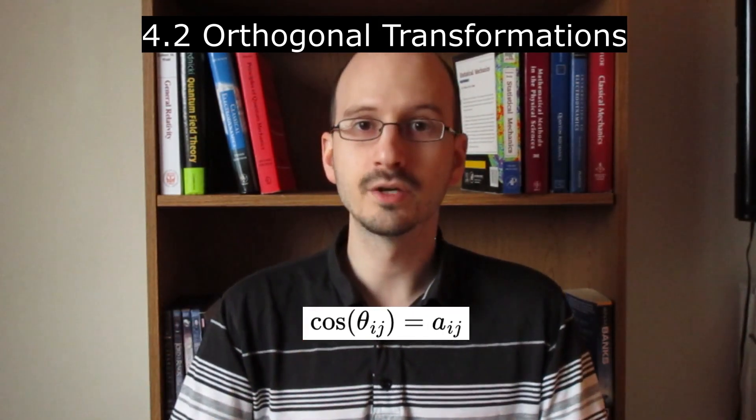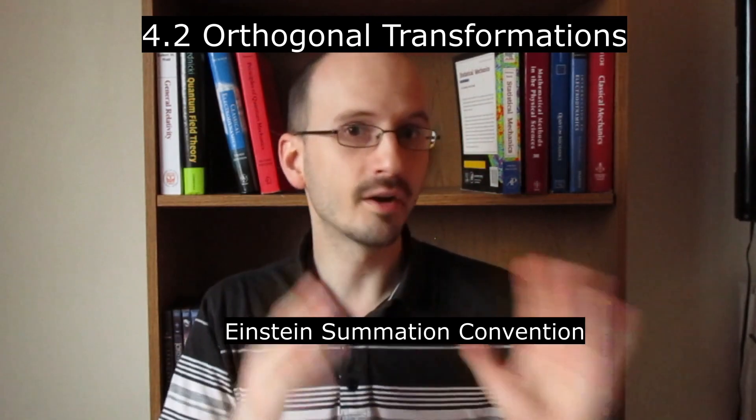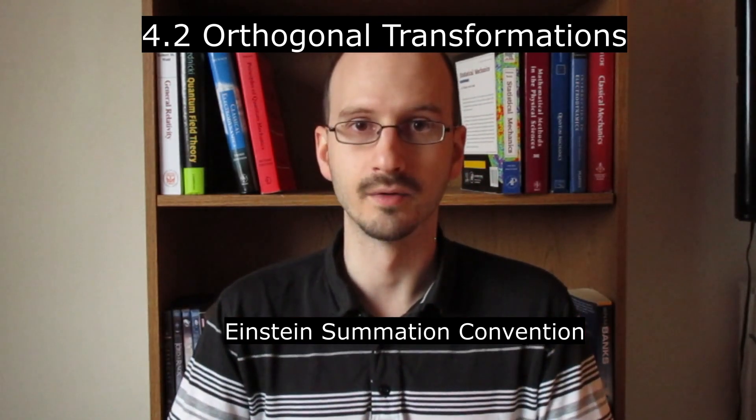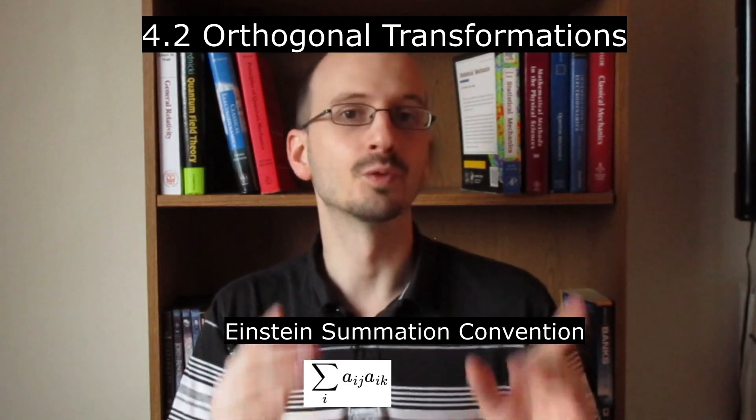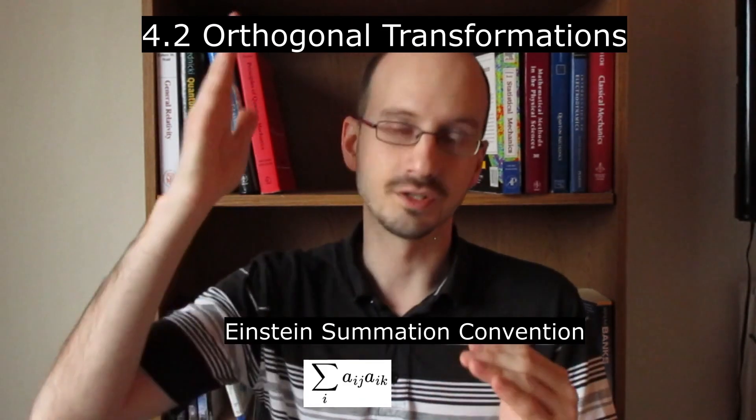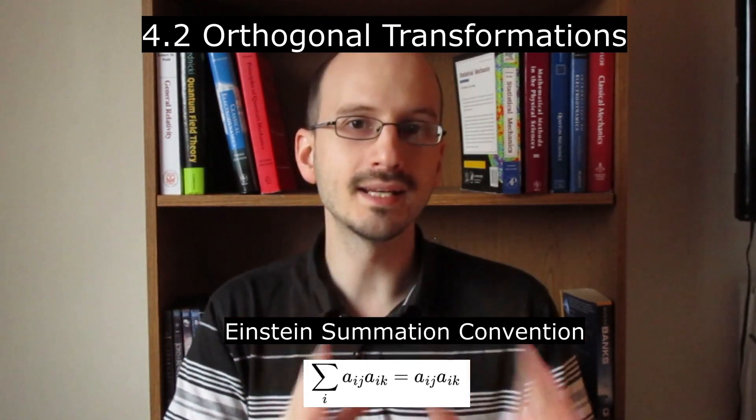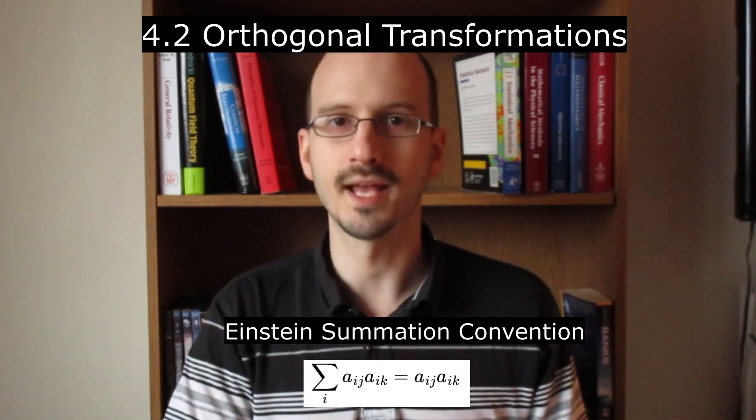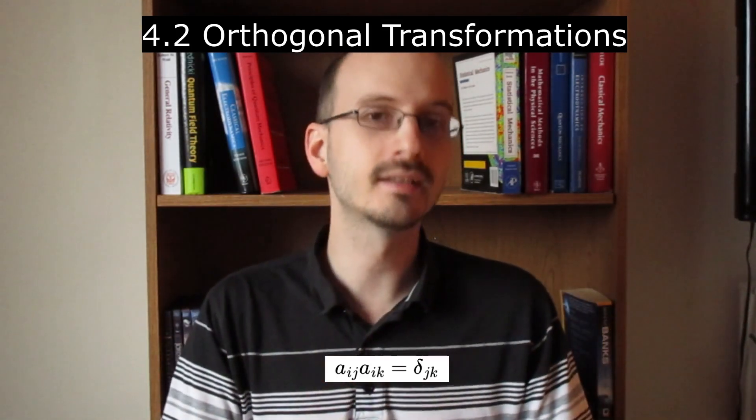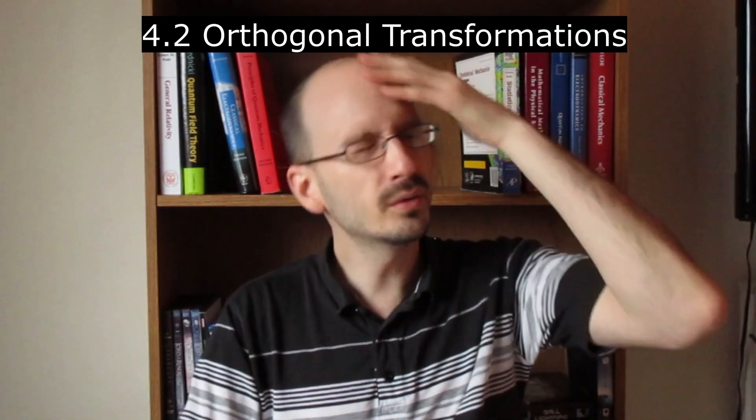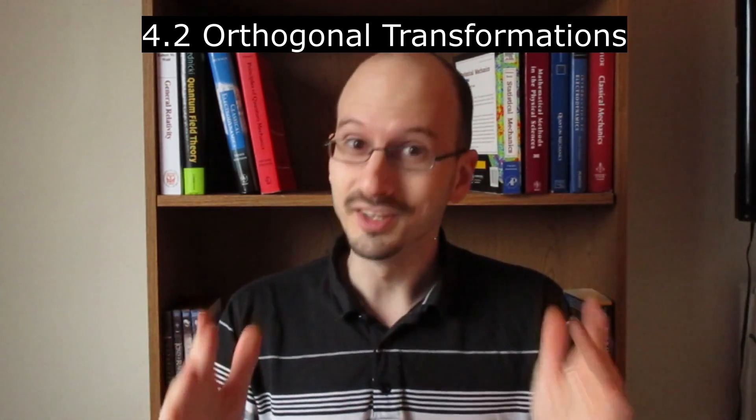The book then introduces a math notation called Einstein summation notation. And this is math, but it's very, very common in physics, so it's worth bringing up now. When we have a sum of two things multiplied together with indices, we notice that the index we sum over is repeated in the two objects. Therefore, we just cut off the sum. We don't write it. And when we have two objects multiplied together with a repeated index, it just means sum over that index. And when the sum of aij, aik equals the Kronecker delta, that is called an orthogonal transformation. Whew, that was a lot of math. Well, don't worry, because if you forget it, that's totally fine. There will not be a test.